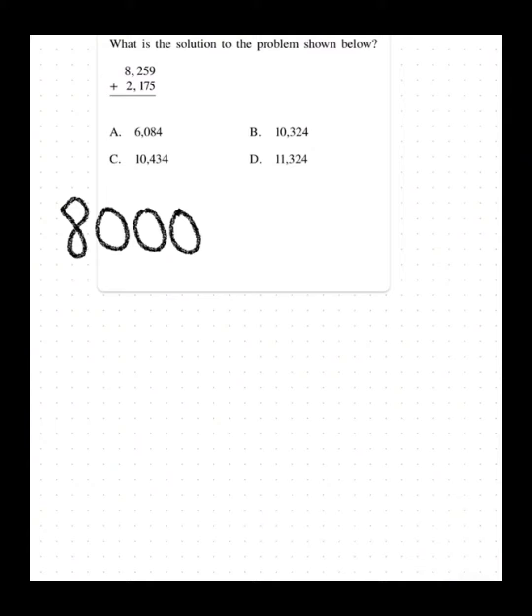First, I'm going to estimate my answer by rounding to the nearest thousand. So 8,259 rounds to 8,000. 2,175 rounds to 2,000.